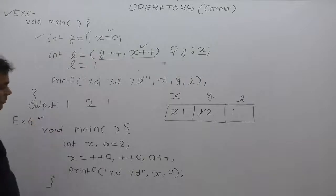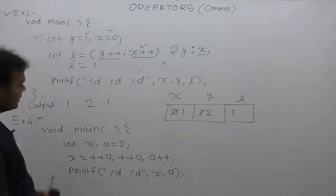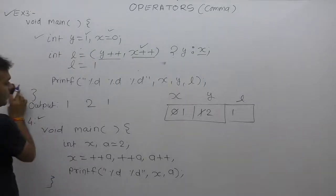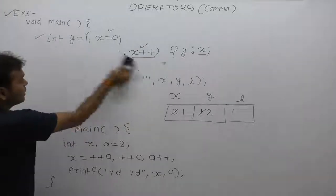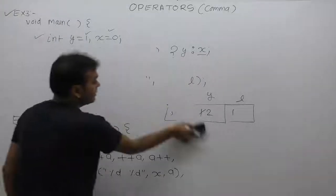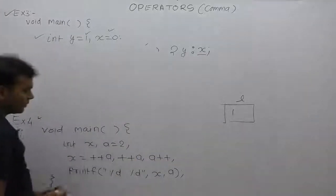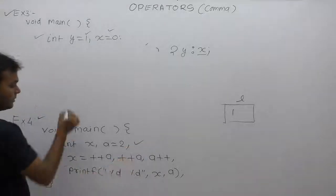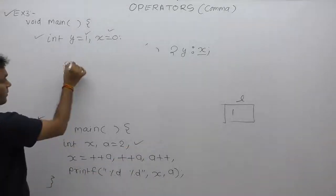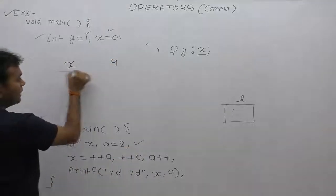Next is Example 4. In this case, again we are declaring two variables: x and a.